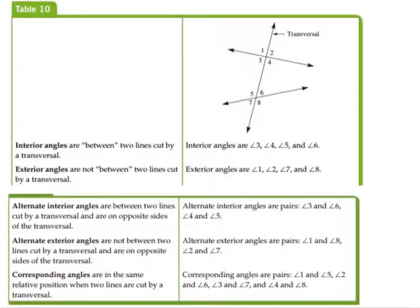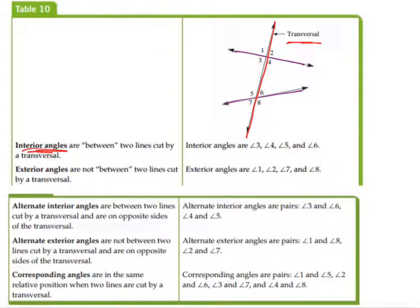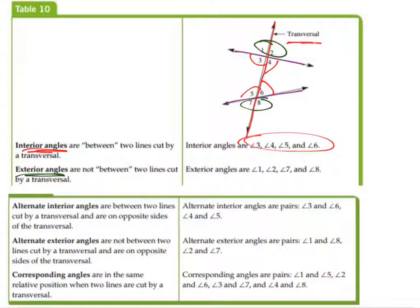Now we're going to have two lines cut by a transversal. We have these two lines, and then we have a transversal cutting across them. 'Trans' just means across — transport means to move across town, transatlantic flight means across the Atlantic Ocean. So a transversal is a line that goes across the other two lines. We're going to talk about specific names for types of angles. First, interior angles — these are the four angles inside the two lines: angles 3, 4, 5, and 6. Exterior angles — the four outside: 1, 2, 7, and 8.